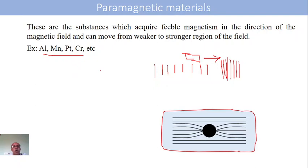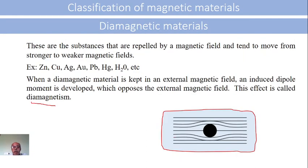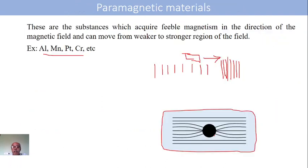Aluminium, manganese, platinum, chromium, etc. are paramagnetic materials. From the figure, magnetic lines of force passing through the paramagnetic specimen is less. In case of diamagnetic materials, magnetic lines of force passing through the specimen is almost zero — the lines of force are deviated away because the specimen repels them. In case of paramagnetic materials, a few lines of force tend to pass through the specimen.